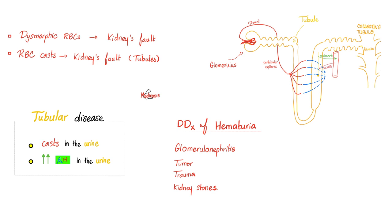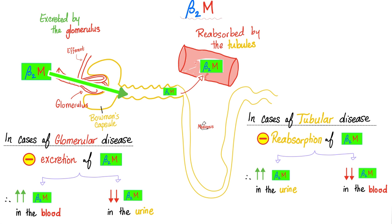The second question: who is to blame — the kidneys, ureters, bladder, or urethra? Look at dysmorphic red blood cells and red blood cell casts. If you see them, the pathology is in the kidney. Third question: should you blame the kidney glomeruli or the tubules? Order beta-2-microglobulin — it will help you tell the difference. I have a separate video about this in my lab's playlist.